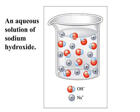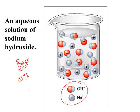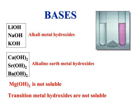Your strong bases are also dissociated 100%. Sodium hydroxide, NaOH, is a strong base and would be represented in aqueous solution as 100% dissociation of Na+ and OH- ions, just as with the acid — 100% dissociated.